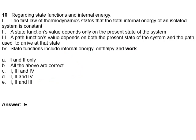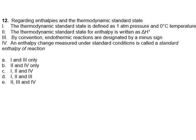Regarding enthalpy and thermodynamic standard state: the thermodynamic standard state is defined as one atmosphere pressure and zero degrees temperature — that's wrong, it's 25°C, not zero. The thermodynamic standard state for enthalpy is written as delta H standard — that's correct. By convention, endothermic reactions are designated with a minus sign — that's wrong; it's exothermic reactions that get the minus sign, and endothermic would be a plus sign. For an enthalpy change measured at standard conditions, it's called standard enthalpy of reaction — that sounds correct. So two and four are right, which is answer choice B.